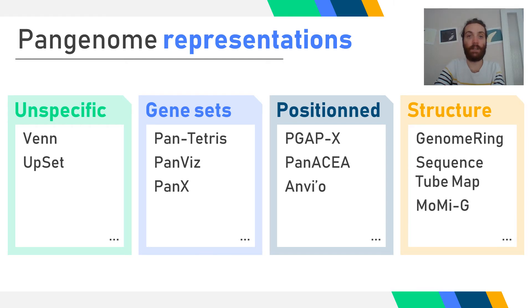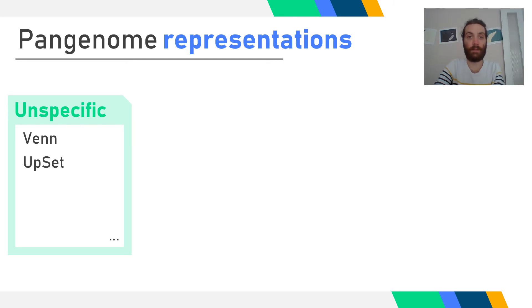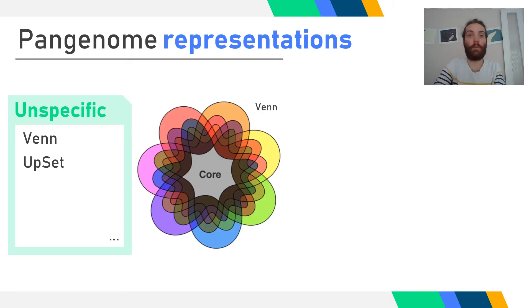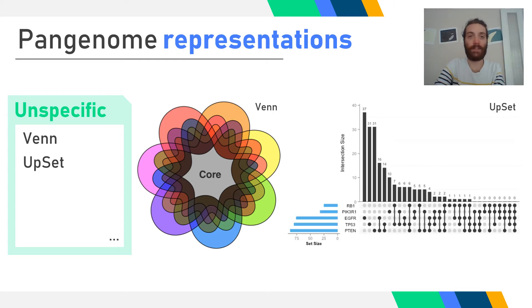Gene pan-genomes are widely considered as sets of elements, therefore often represented as Venn diagrams. One of the drawbacks of this representation is that it does not scale well with augmenting the number of genomes or sets, as all possible intersections are hard to display. UpSet plots are alternative representations that display counts for every type of set intersection, as in a bar plot. They scale better, but are not fit for pan-genomes with tens or hundreds of genomes, as the number of possible intersections grows exponentially.